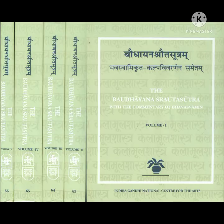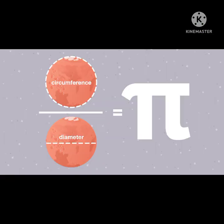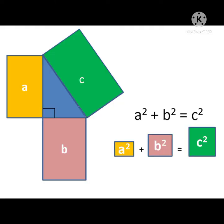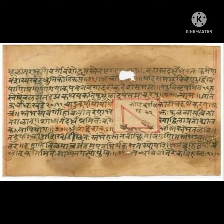Baudhayana's treatise Sulbha Shastra, or Sulabha Sutra, shows us that he was the first human to determine the value of pi, and also prove that the hypotenuse square is equal to base square plus height square — or C square equals A square plus B square in a right-angled triangle — now known as the Pythagorean theorem.